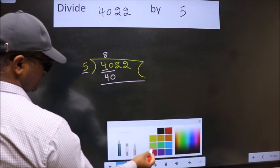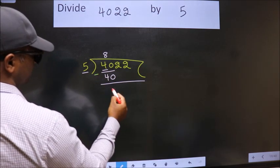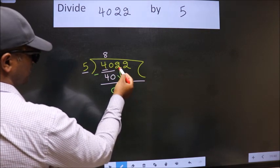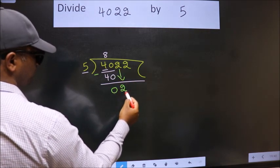Now we should subtract. We get 0. After this, bring down the beside number. So 2 down. Now,